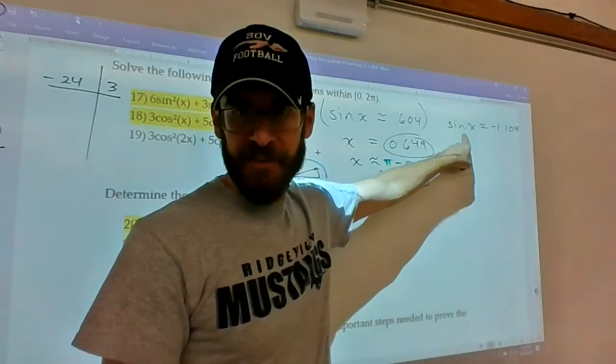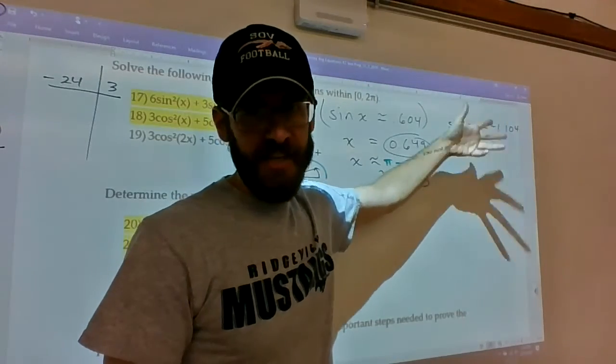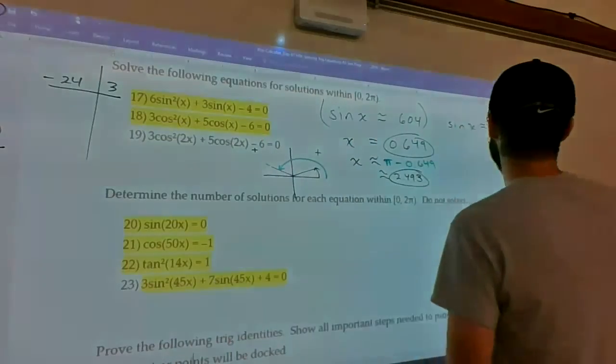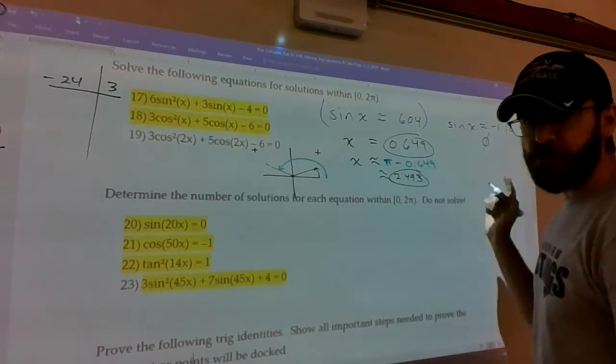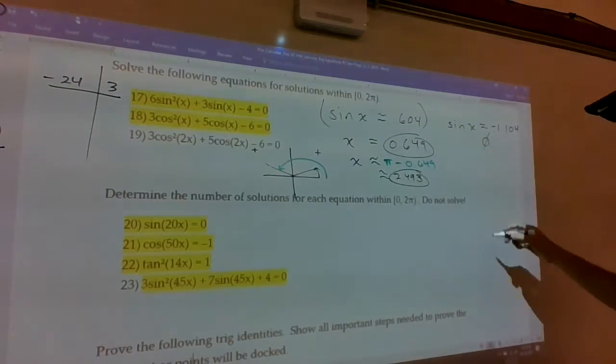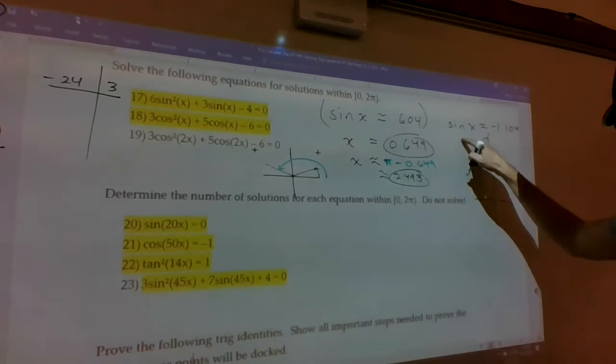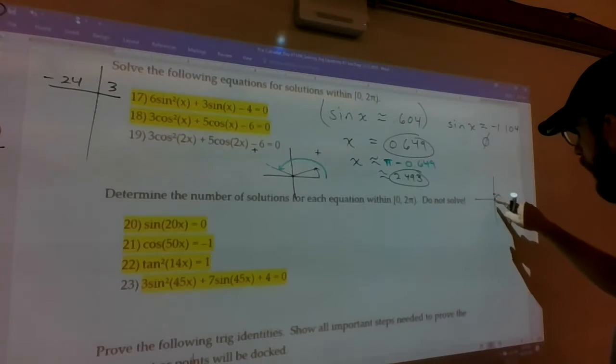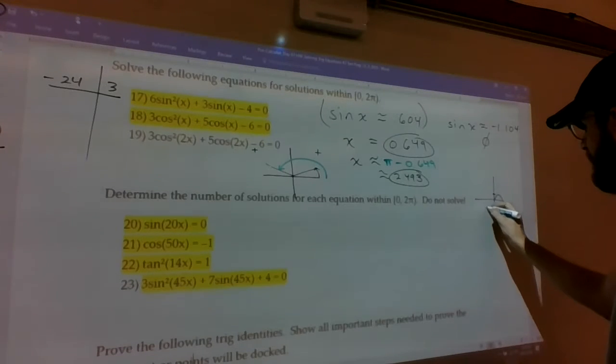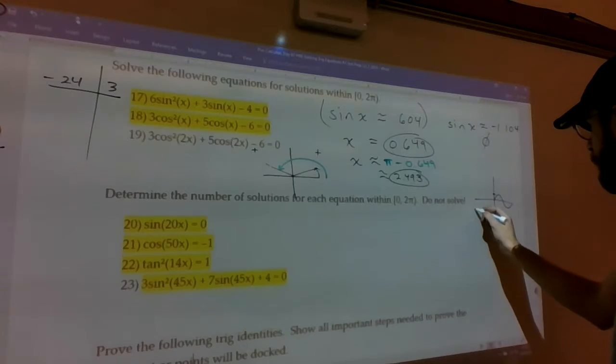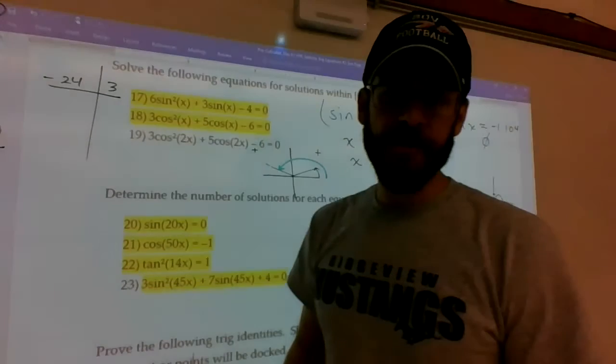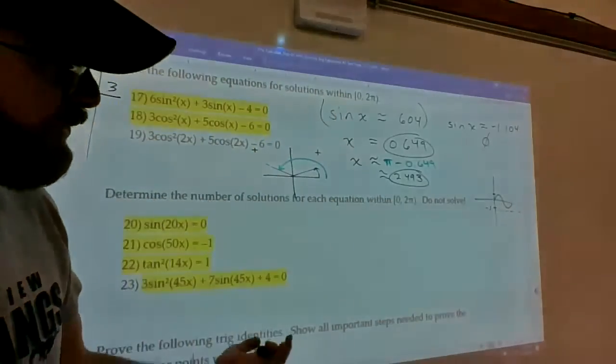If I do inverse sine of this one it just gives me like an error domain error. So there's no real solution to this equation because if you think about what the graph of sine of x looks like, it has a peak of 1 and a valley of negative 1. It never crosses negative 1.1 so they never intersect, there's no solution to it.